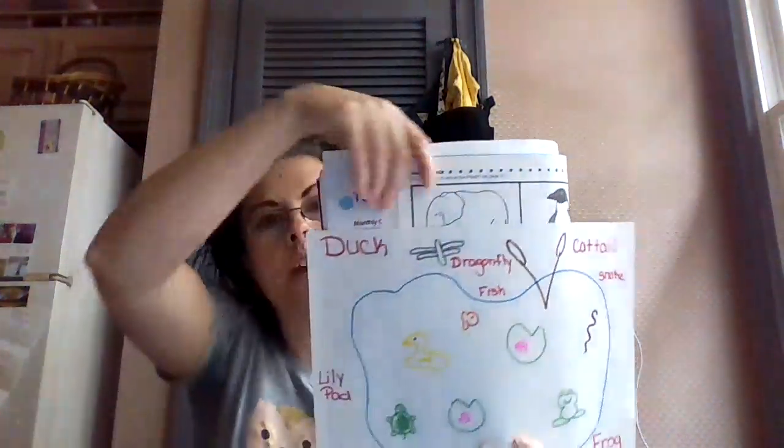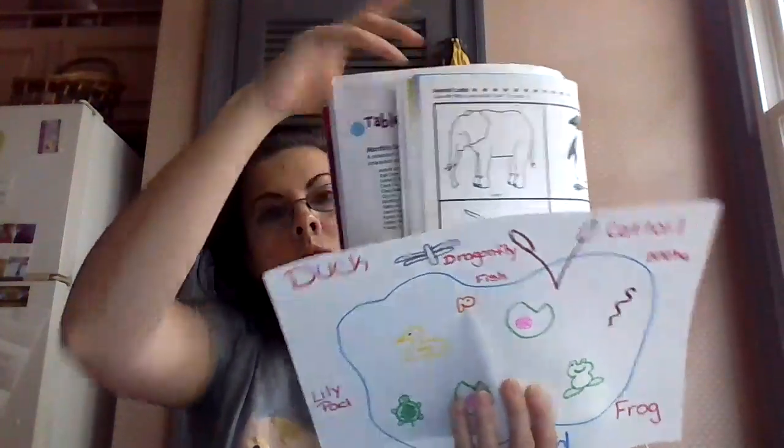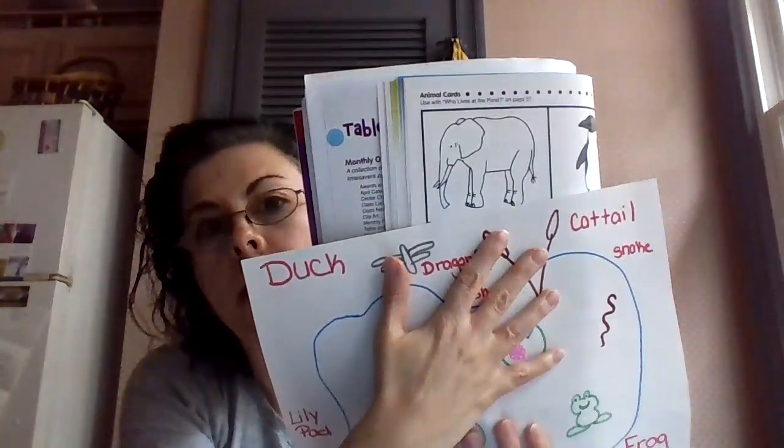We're going to play a little game right now. I want you to try to guess — we're going to name some animals and figure out if they live in the pond. I'm going to hold up a picture and I want you to take a look. What animal do I have right here? That's an elephant. Does an elephant live at the pond? No, the elephant doesn't live at the pond. I can't trick you guys! Elephant doesn't live at the pond.